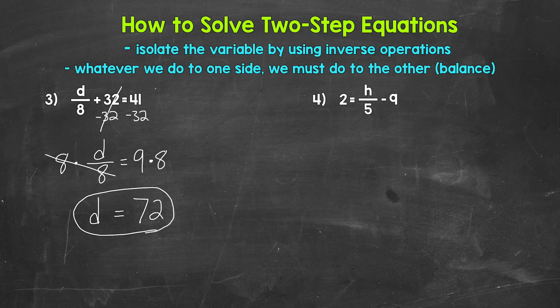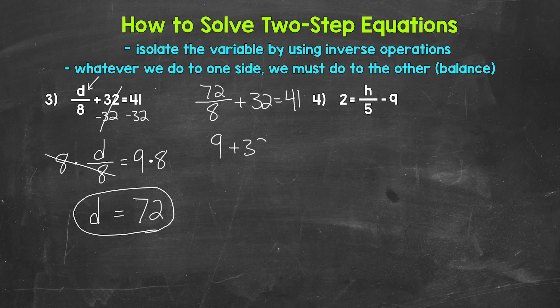Let's check that by plugging 72 in for d. We have 72 divided by 8 plus 32 equals 41. 72 divided by 8 is 9, so we have 9 plus 32, and that gives us 41. So we are correct. d equals 72.